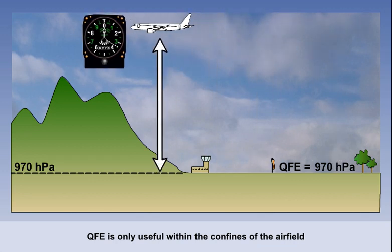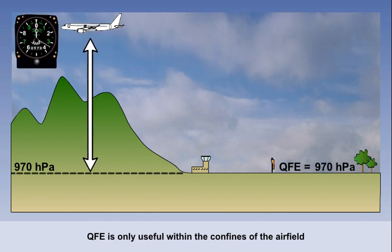Looking at the diagram, we can see that if we were to fly five miles away, the altimeter will still read the height above the airfield. Notice that because the ground is uneven, we no longer have a reading that tells us how high we are above the ground in our immediate vicinity. This is not very useful and could lead to potential problems, especially if we are unable to see the ground.